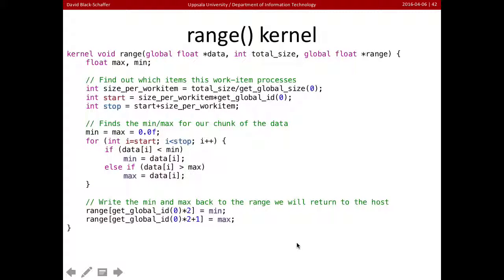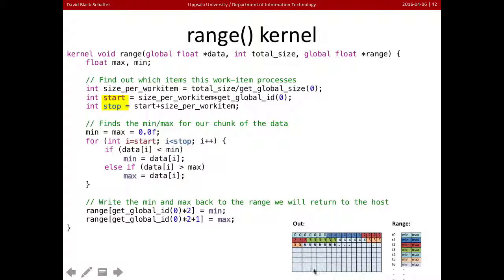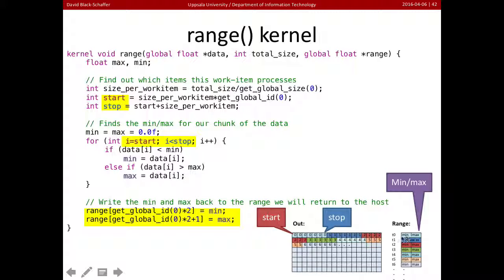Here's the range kernel. The first thing it does is figure out the start and stop addresses for each thread — which chunk of the data to work on. Then it loops over the data it's responsible for and calculates the minimum and maximum. Finally, it writes the results back into the correct location. Each thread chooses its chunk and processes it independently.